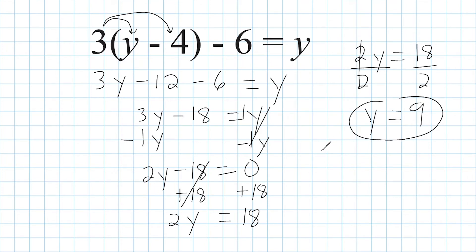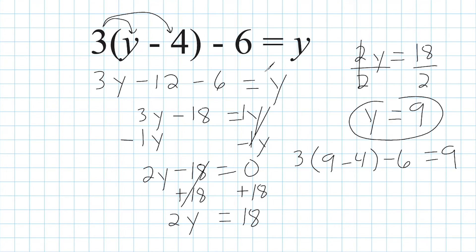Let's check our answer by plugging 9 into our equation. I'm going to rewrite this as 3 times (9 minus 4) minus 6 equals 9 — all I did was substitute y with 9. In the parentheses we have 9 minus 4 which is 5, and 5 times 3 gives us 15. Then 15 minus 6 is indeed equal to 9. So our answer checks out.